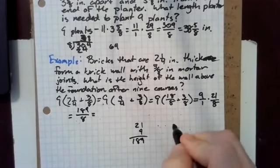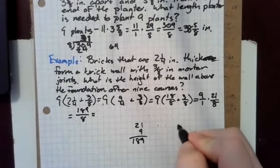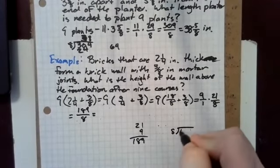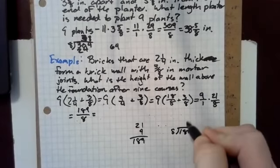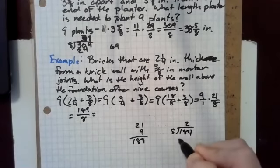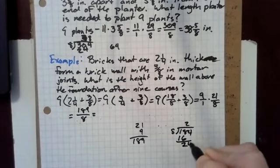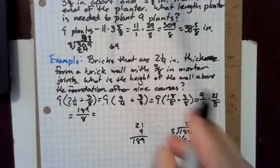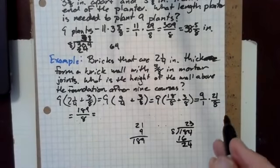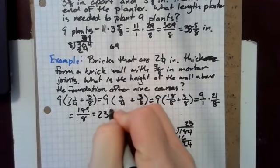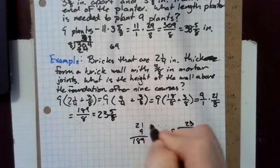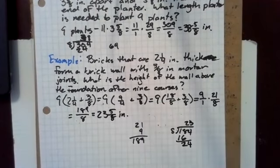184 is divisible by eight. It goes into 18 twice, two times eight is 16. 24, that's three. 23 and five eighths. It's going to be 23 and five eighths inches high.